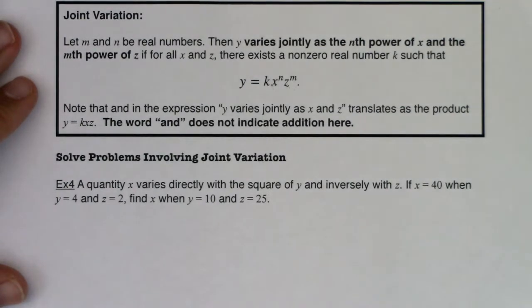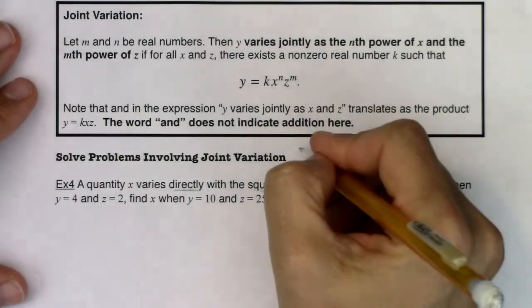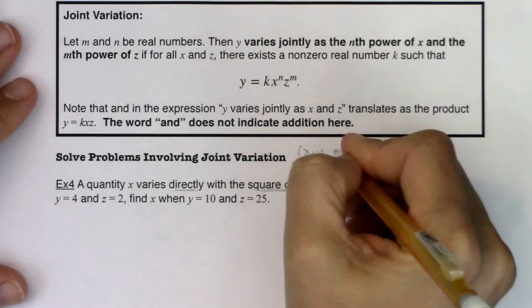Alright, so that's a bunch of information, and that's all fine and good, but let's take a look for buzzwords. The first thing I would pick up is directly and then I hear square of Y. I also have inversely and Z. So I have three variables in this problem, right? We have X, Y, and Z.